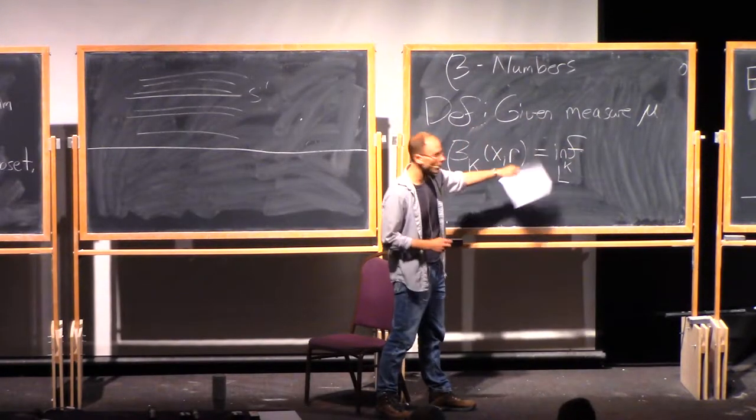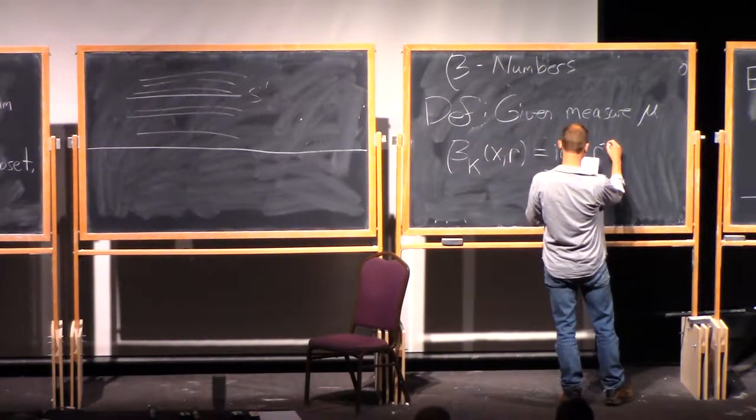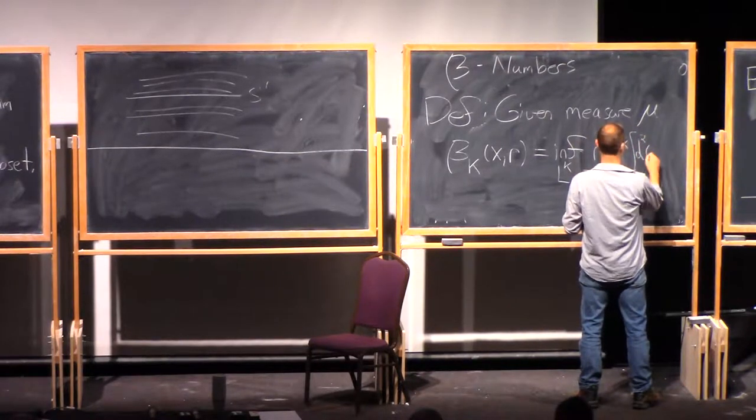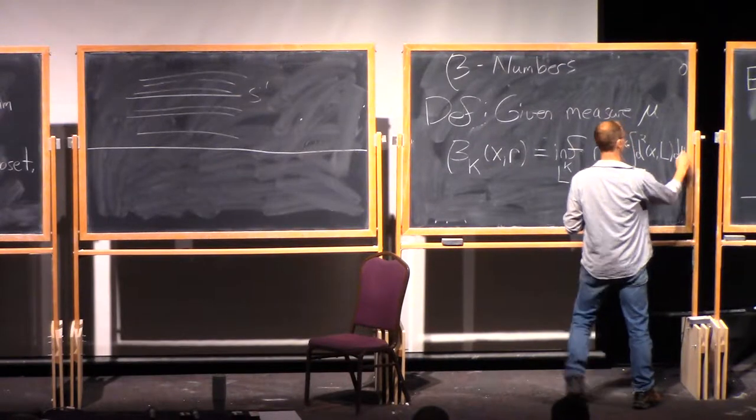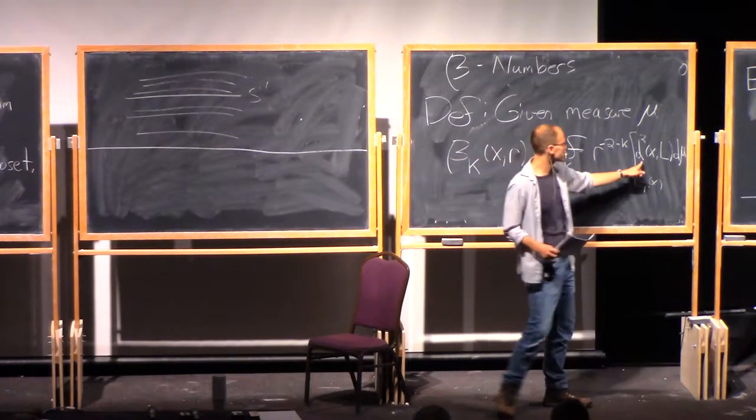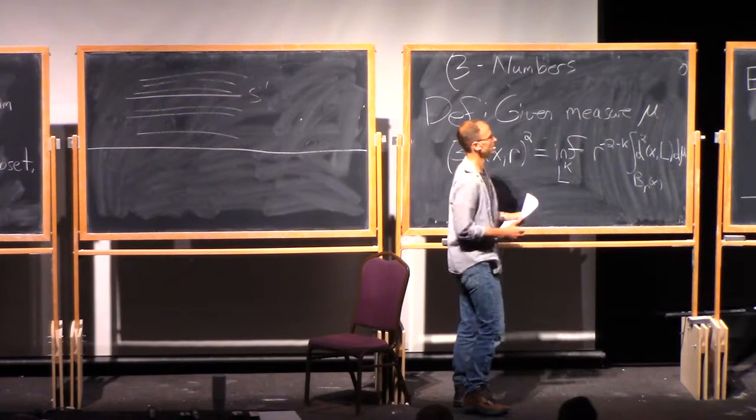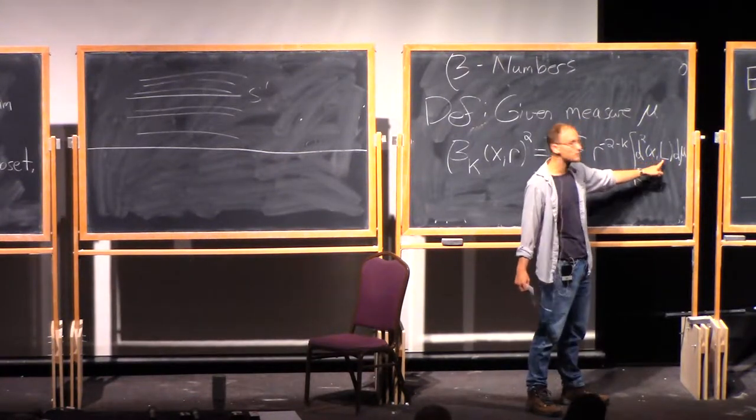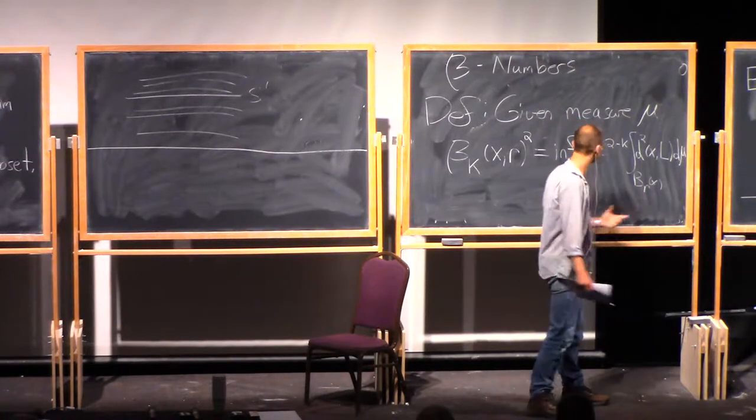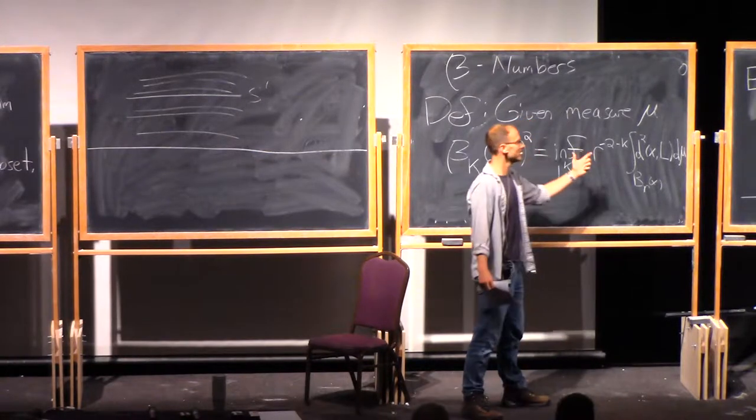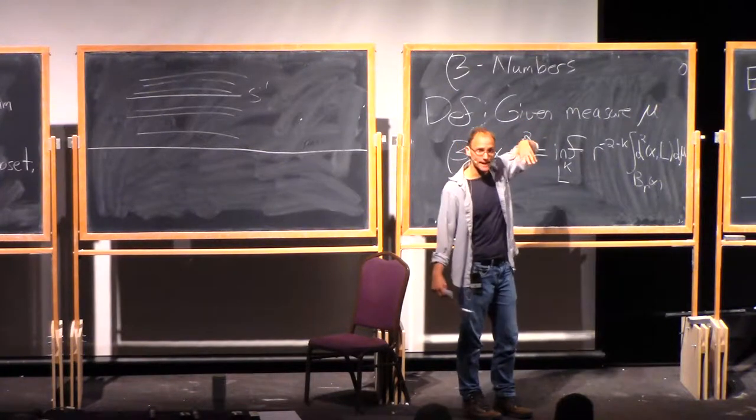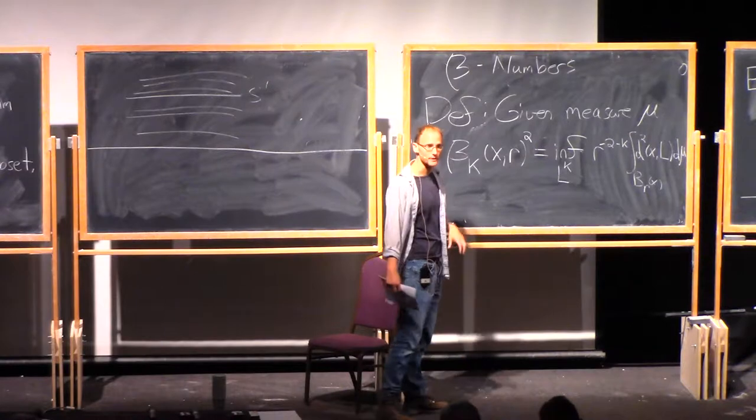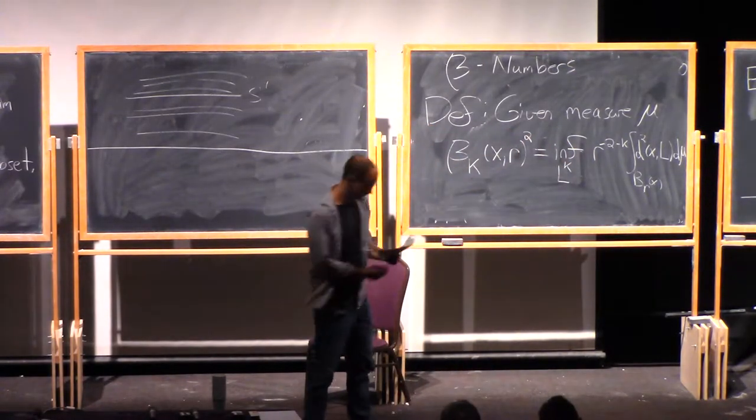And just like with the Reifenberg condition, we're going to infimum over all affine subspaces, but what we're going to infimum is the scale invariant integral. So we take L, we look at the distance function to L and square it. This is beta squared. We look at the distance function to L. For every point in the support of mu, how far away is that point from L? We square it, and then we integrate it over the whole ball. This here is exactly scale invariant.